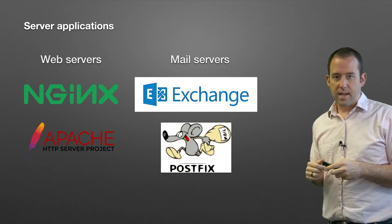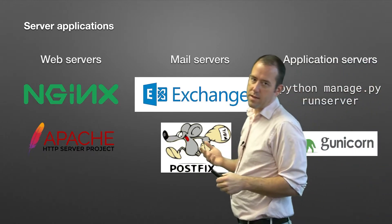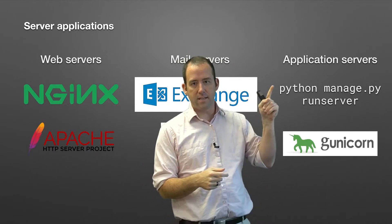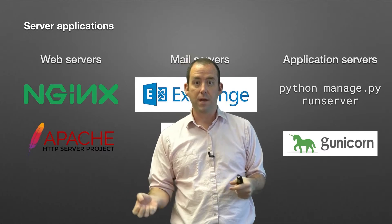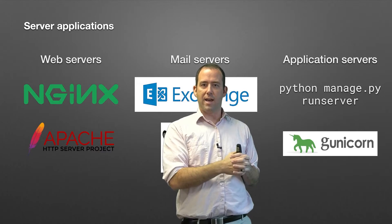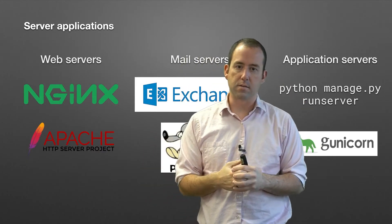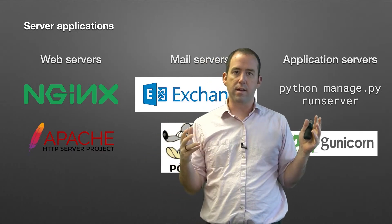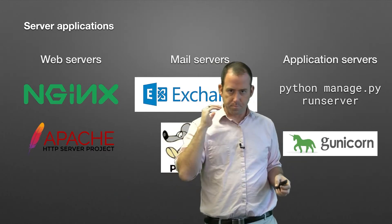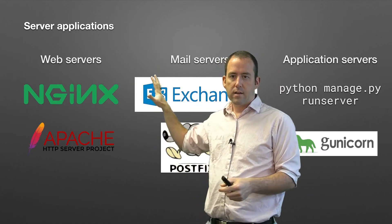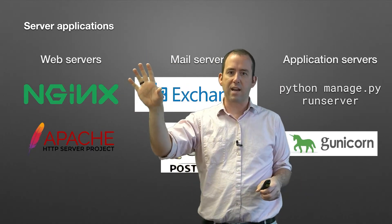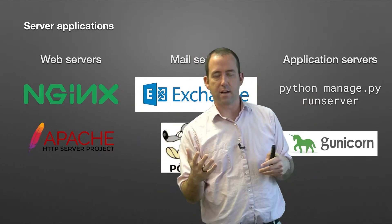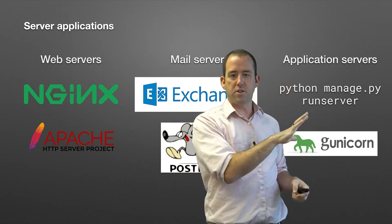Then you've got application servers. You might be familiar with one like Python manage.py runserver. If you've run a Django application, that's what you've done — that is an application server. The application server's job is to receive a request, pass it off to some code to do some stuff, and return a response — either a view or something along those lines. Gunicorn is a production version of that, and there are similar application servers for pretty much every language that works on the web. Unlike a web server that returns a static file, an application server does more processing before returning that file.